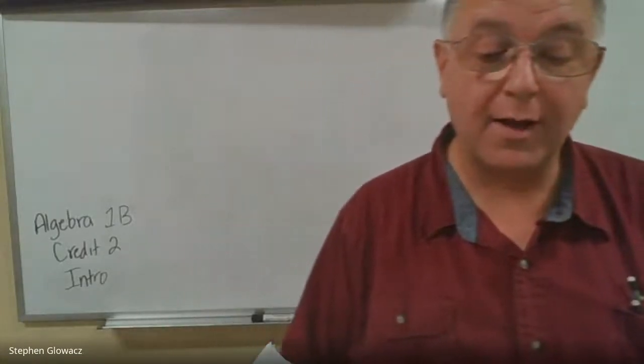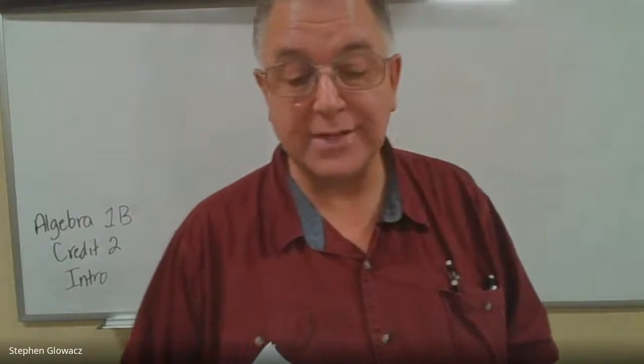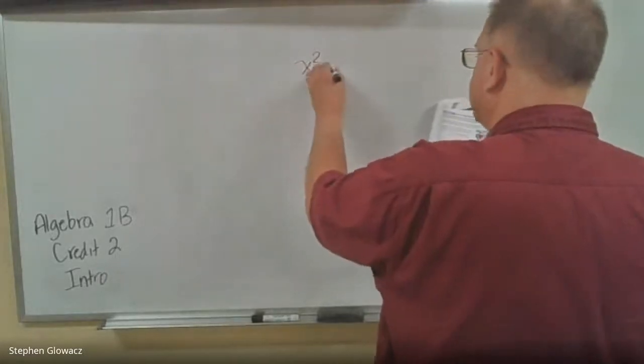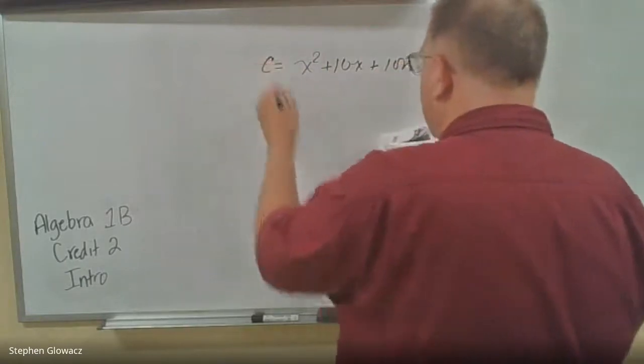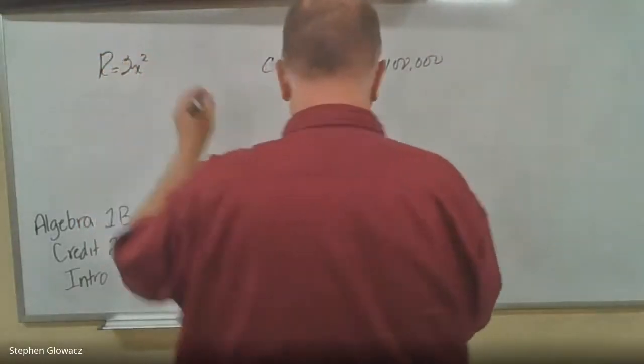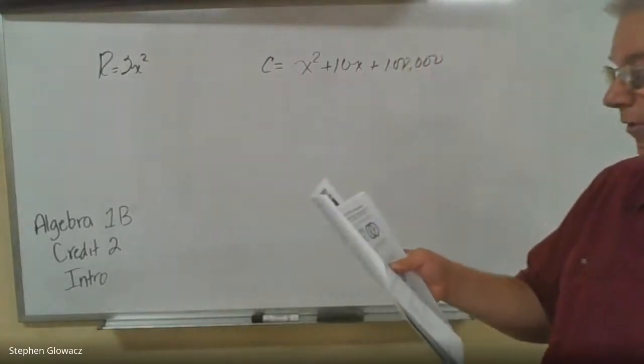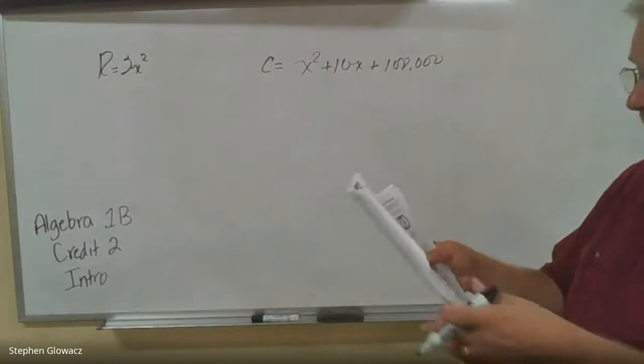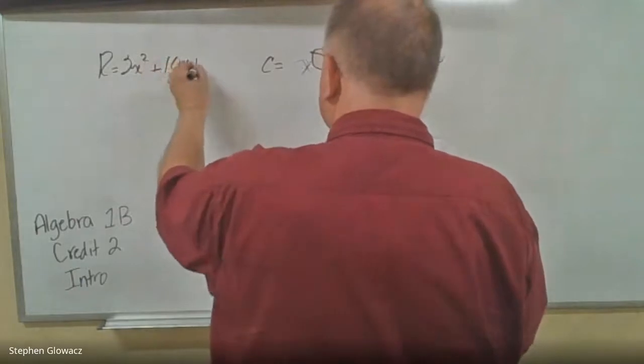We're going to start on that third paragraph there where it says, the cost C paid in dollars to produce X bicycles for your company can be modeled by X squared plus 10X plus $100,000. So that's the cost. And we're told that the revenue is 2X squared. Actually, let's not jump down to that yet. In manufacturing, revenue represents the total amount of income generated by the sale of goods or services. The revenue earned in dollars by selling X bicycles can be represented by 2X squared plus 10X plus $500.